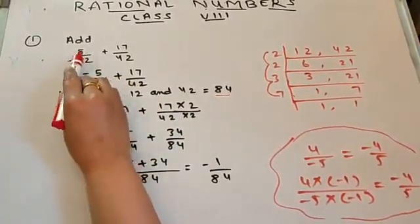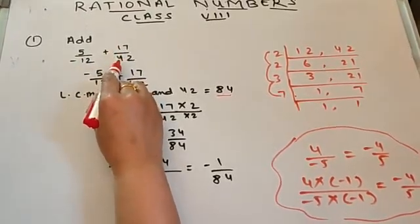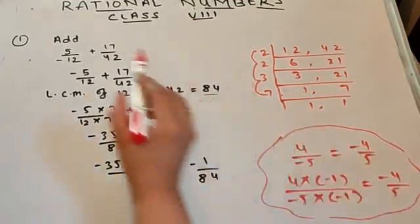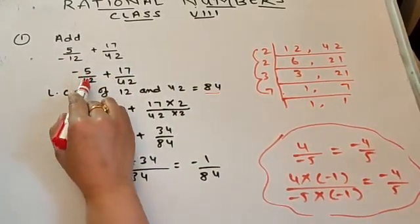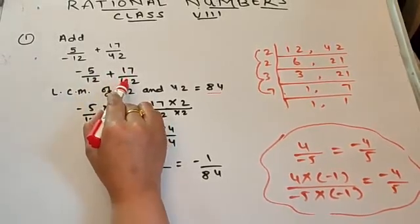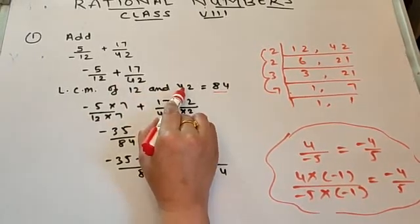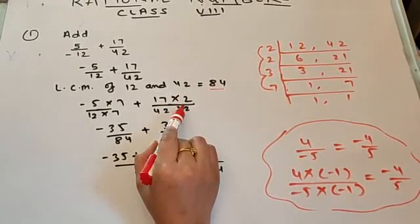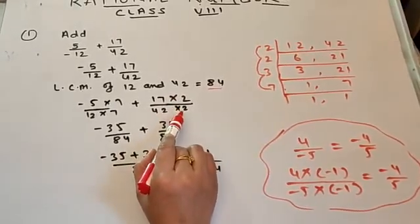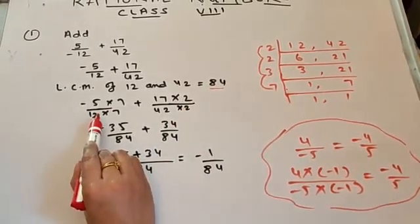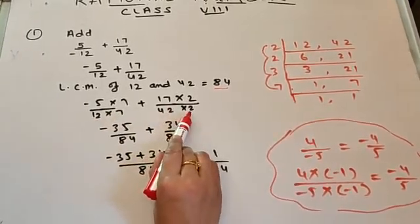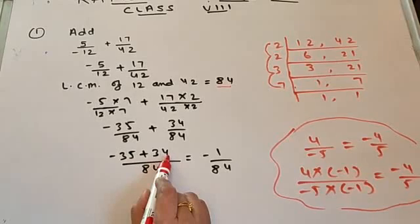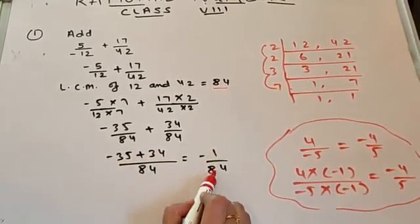Solve another question. Here we have to add 5 upon minus 12 and 17 upon 42. The negative sign is in the denominator. We know that 4 upon minus 5 equals minus 4 upon 5, so we rewrite this as minus 5 upon 12 and 17 upon 42. The next step is to find the LCM of 12 and 42, which is 84. We convert both into equivalent rational numbers with denominator 84 by multiplying 12 by 7 and 42 by 2. Once denominators equal 84, we add the numerators: minus 35 plus 34 equals minus 1 upon 84, which is the required answer.